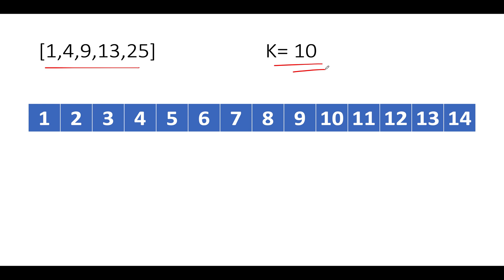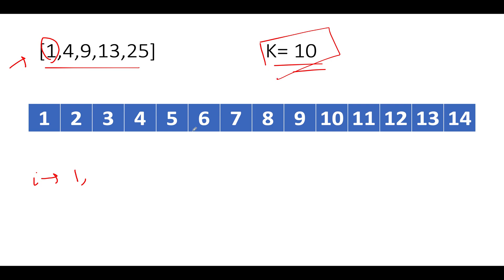The basic approach that comes to mind is: start a loop from i=1, check whether the element is part of your input array. If it is, skip it. If it's not, add that element to your result and reduce the k count. Keep doing this until k reaches zero.